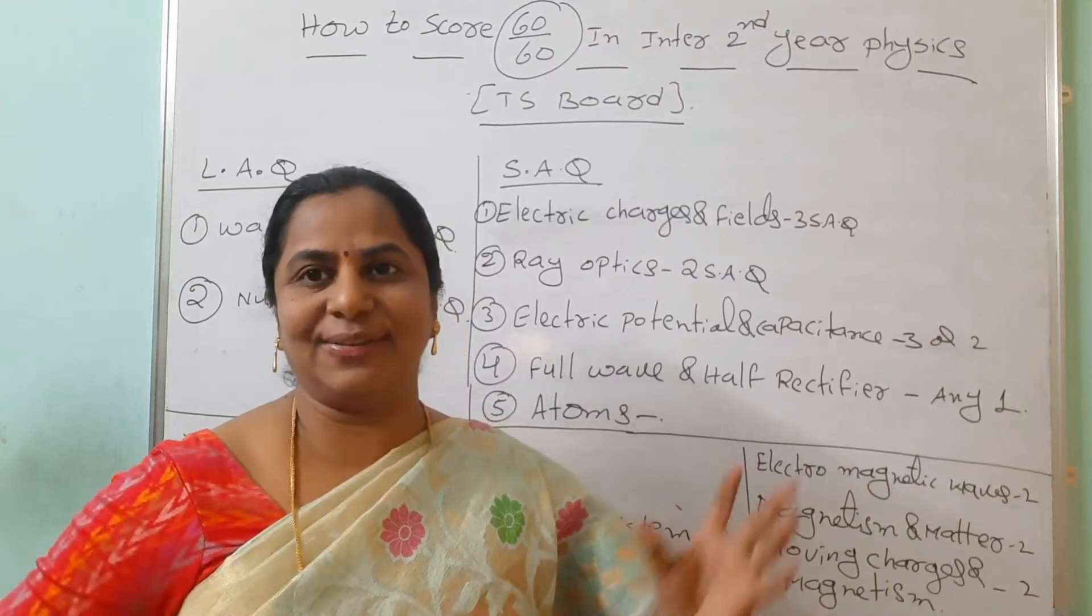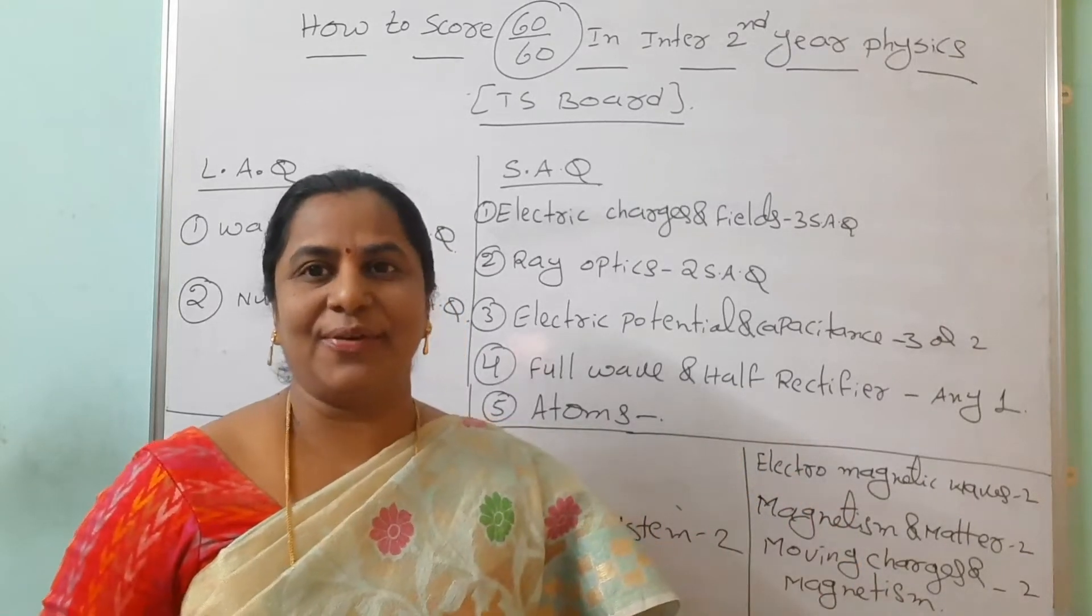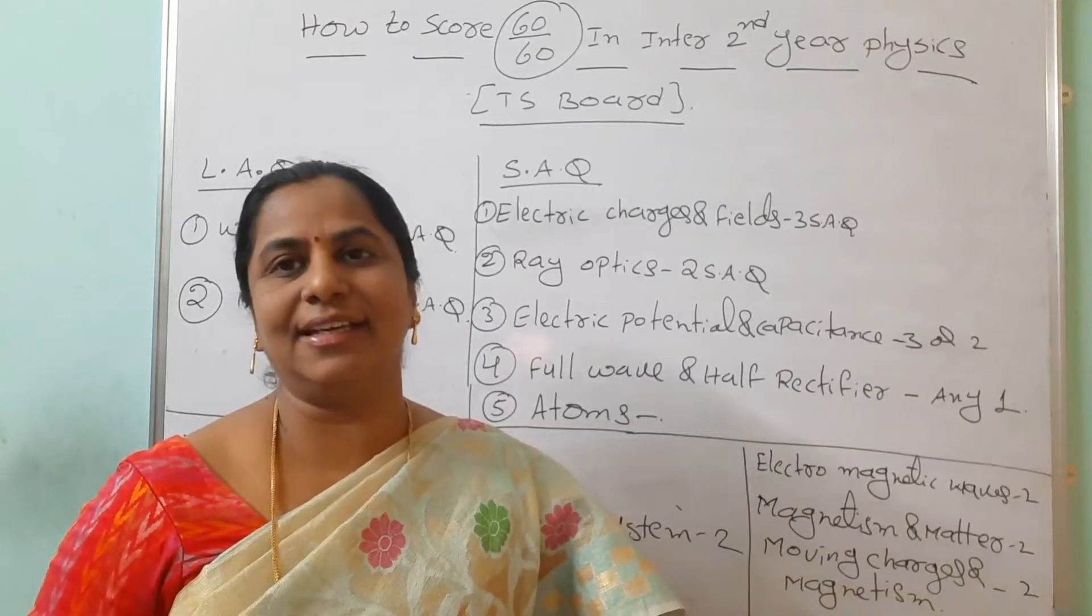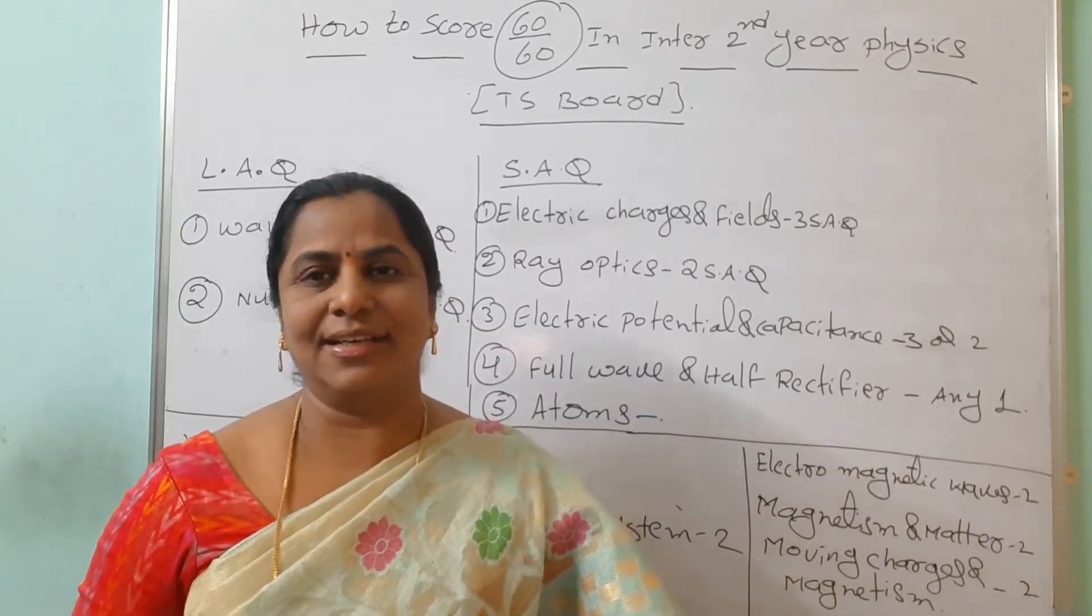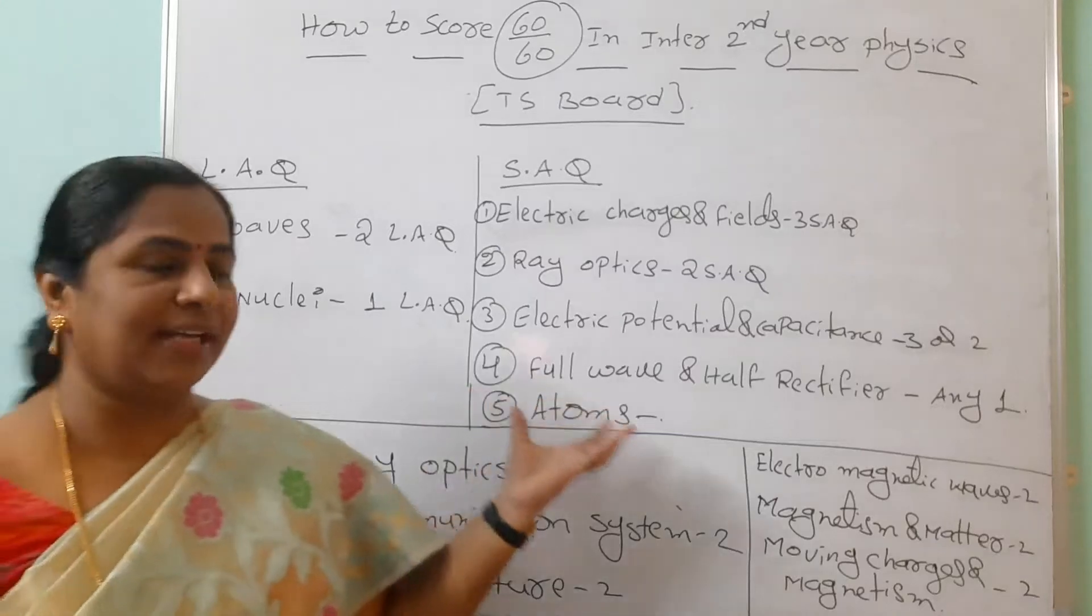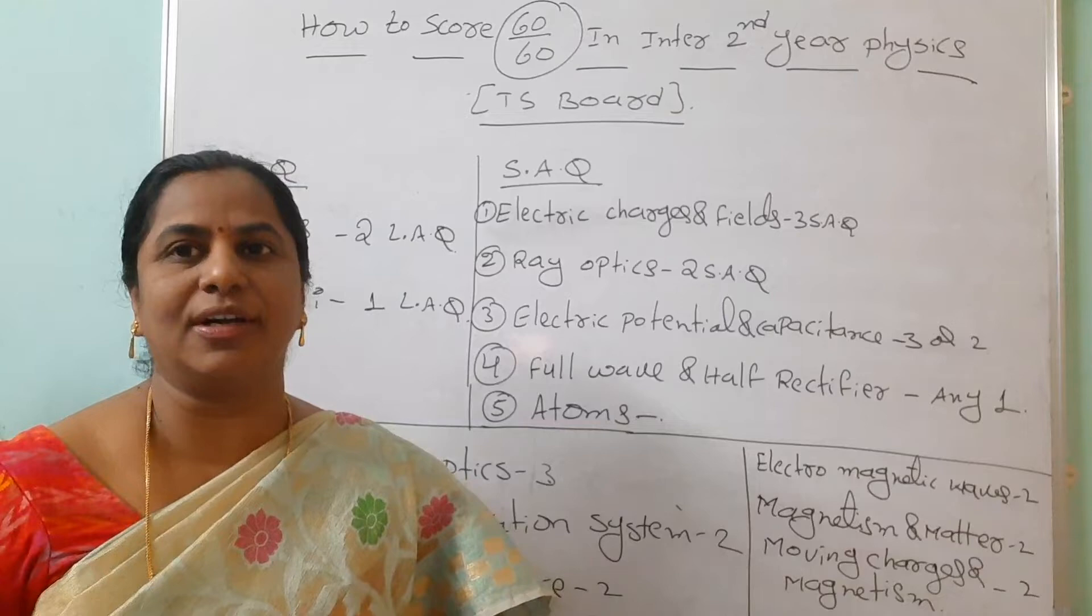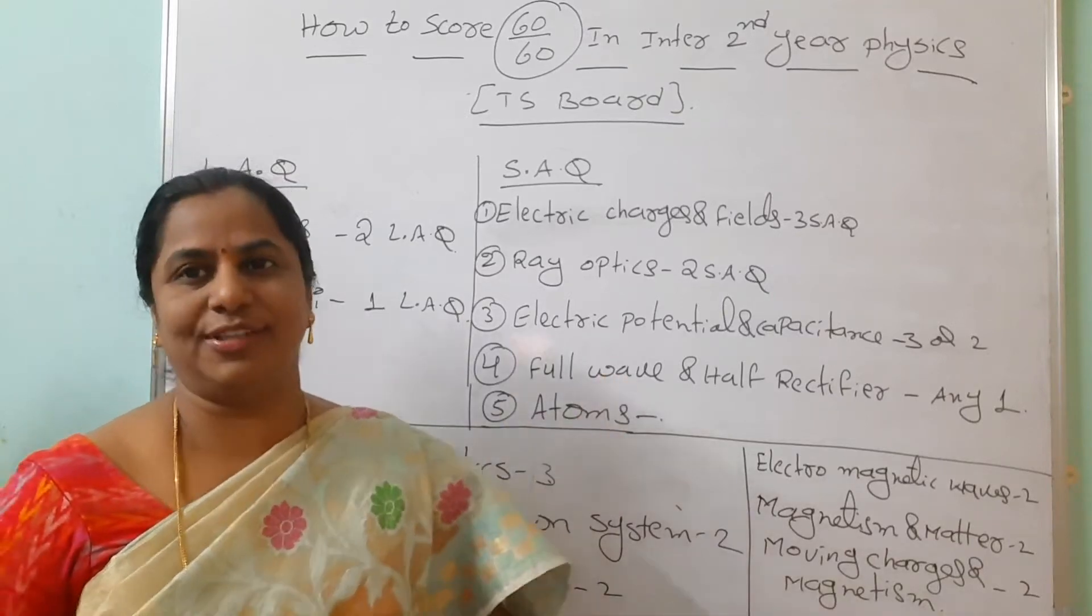Hello, welcome back to our channel. Today we are going to discuss a very important concept: how to score 60 by 60 in intermediate second year physics. Look here, I have already given the weightage according to chapter-wise. If you want to reduce some more chapters, you can follow this also.